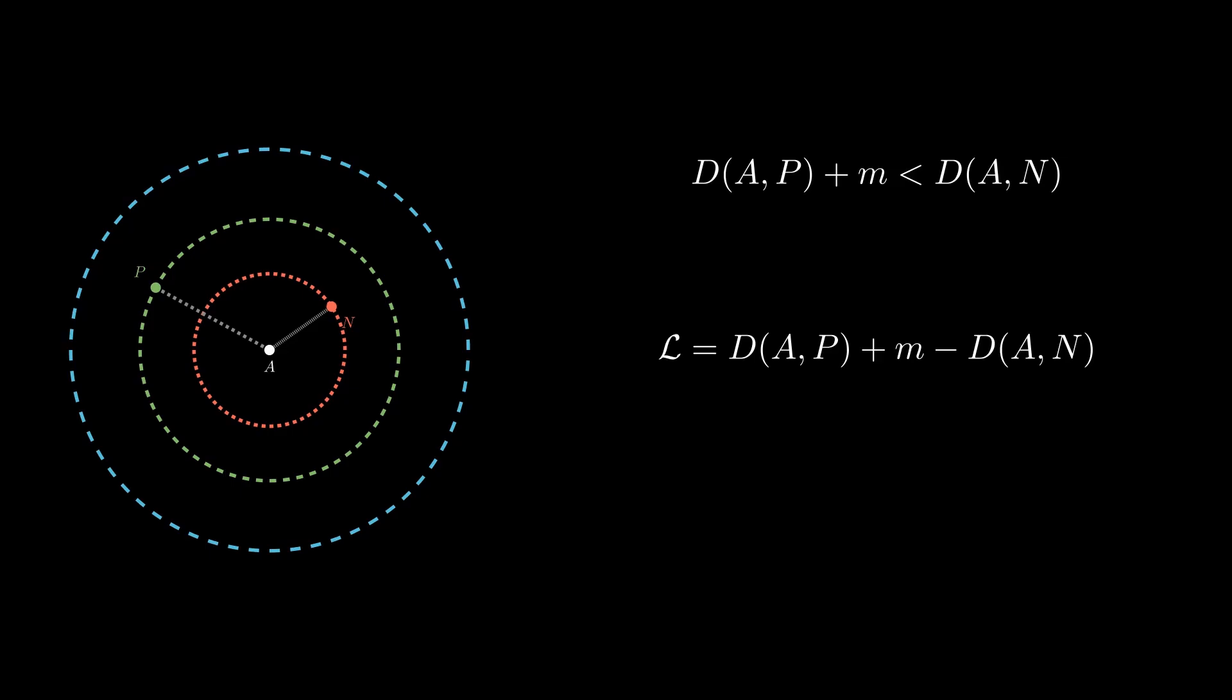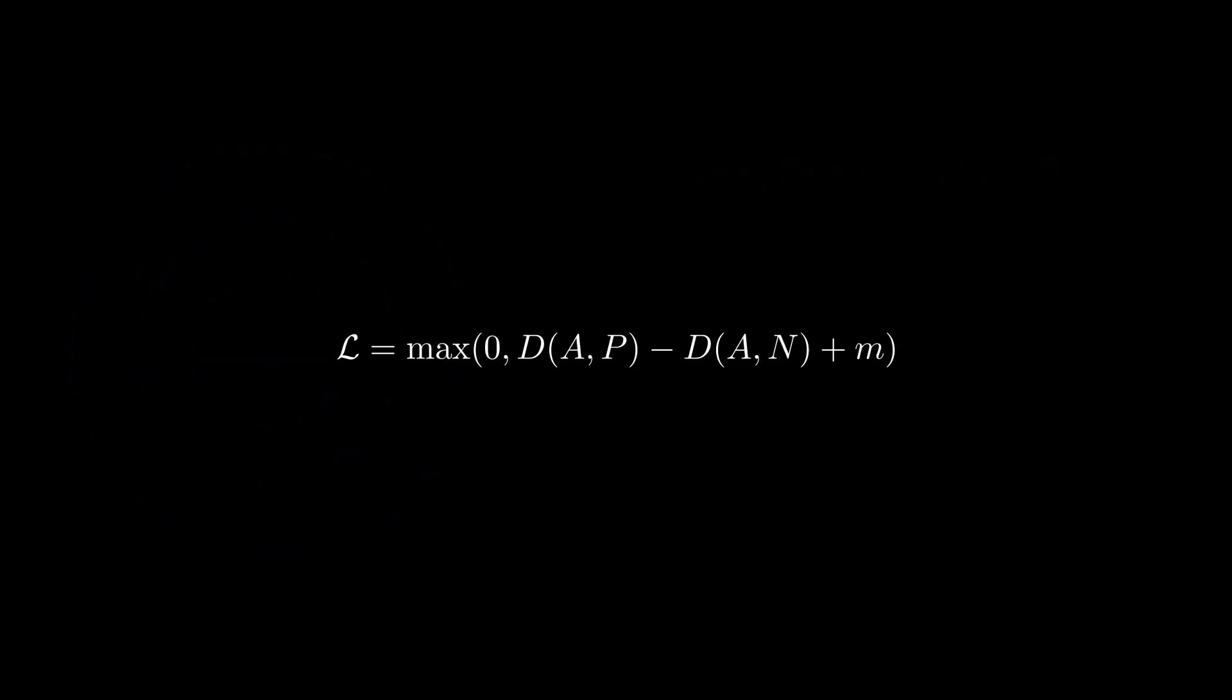In addition, we avoid negative values as it does not really make sense to optimize further once the condition is satisfied. So here we have the final expression of the triplet loss, at least for one triplet of data. The total loss is the sum of these triplet losses across all triplets in the dataset.